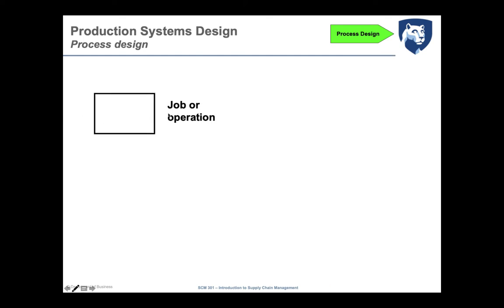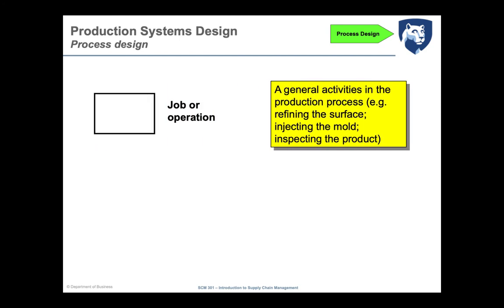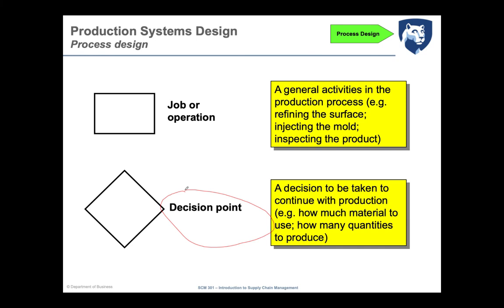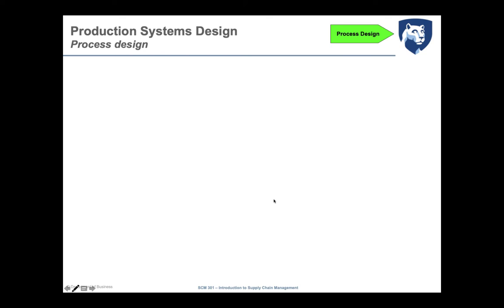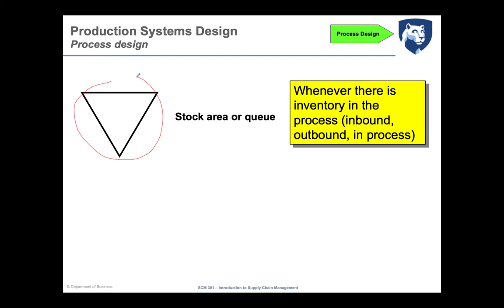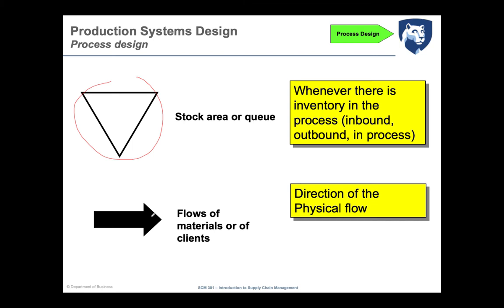The elements of the flowchart are: a job or operation (a general activity in the production process, like refining a surface), a decision point (a decision needed to continue or branch the flow, such as how many units to produce), a stock area or queue represented by an inverted triangle (indicating inventory in the process — inbound, outbound, or in-process), and arrows representing the direction of physical flow.